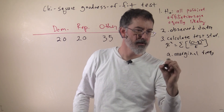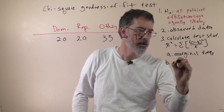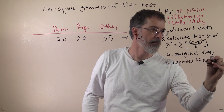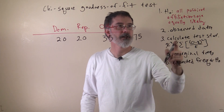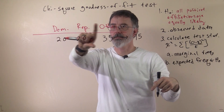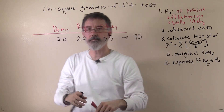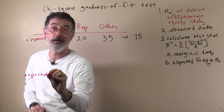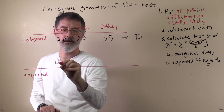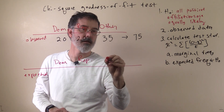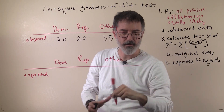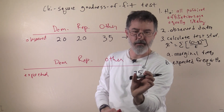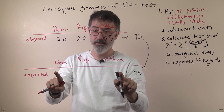Now that we have our marginal frequencies, we can use those to determine our expected frequencies. Remember, these are expected if the null hypothesis is true. If the null hypothesis is true, then students are equally likely to pick all three of these. So we have Democrats, Republicans, and other, with a marginal total of 75. If the null hypothesis is true, these 75 people would have been equally likely to pick each of the three.